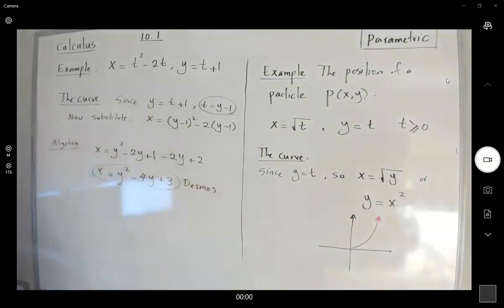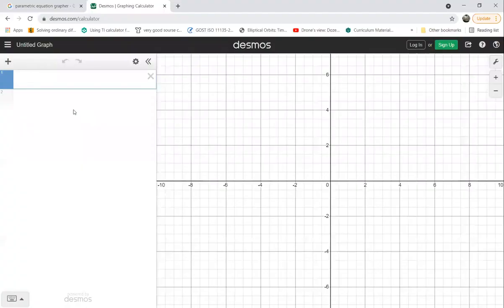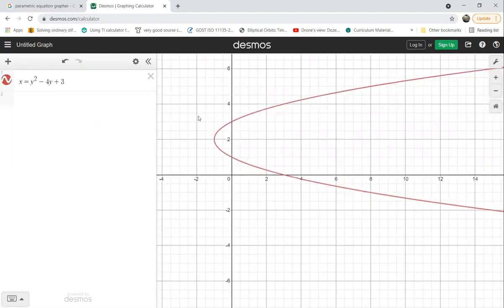Let's take a look at Desmos to help us graph this. So let's write this: x equals y squared minus 4y plus 3. This is our graph.